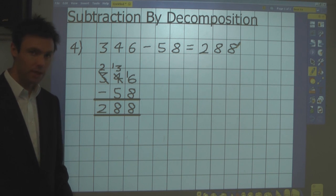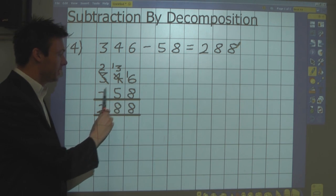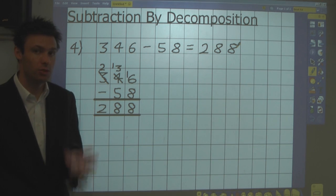Common mistakes children will make, is if they're faced with 6 take away 8, they'll reverse the calculation, do 8 take away 6, which of course you're not allowed to do.